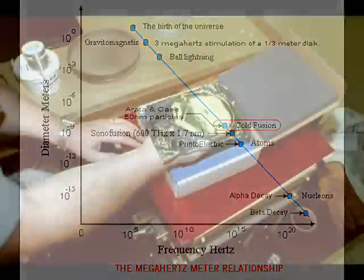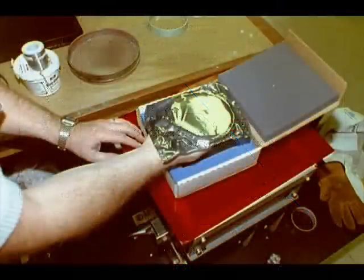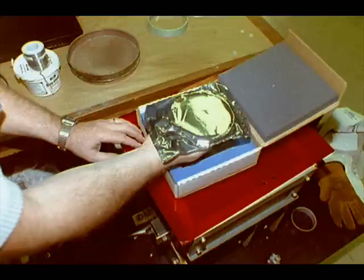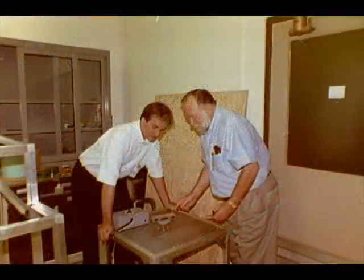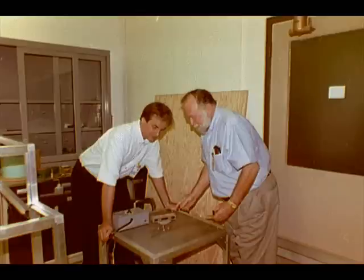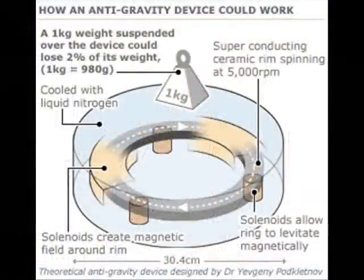And also in the anti-gravity experiments, it was stimulating things called optical phonons. And that has to do with the vibration of heavy nuclear structure. And so the external stimulation, megahertz meter external stimulation, was the velocity of sound in these structures.